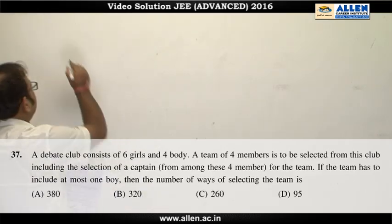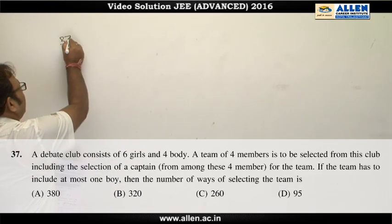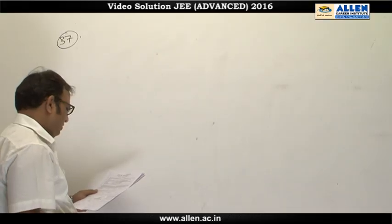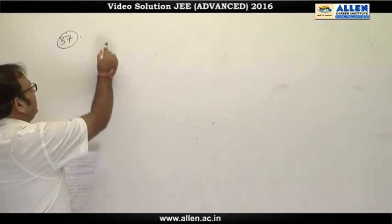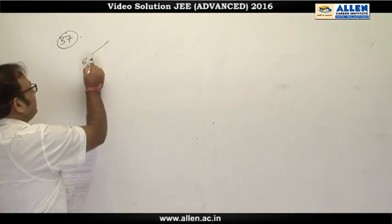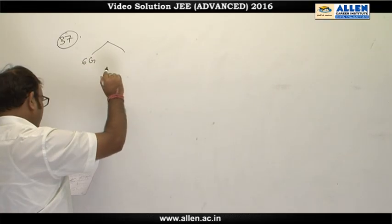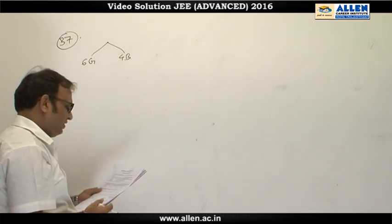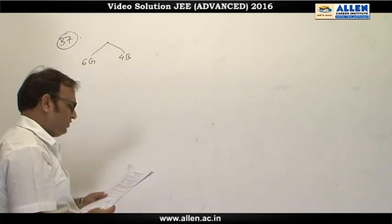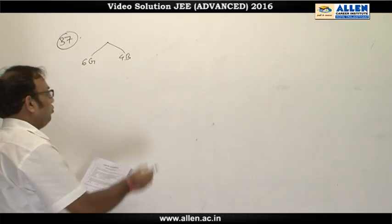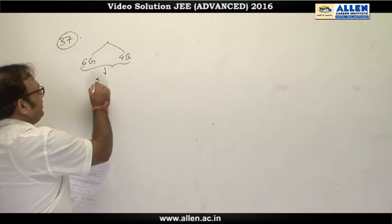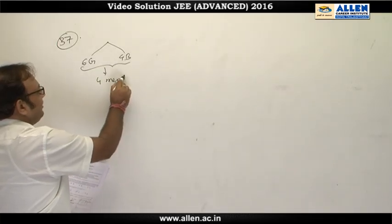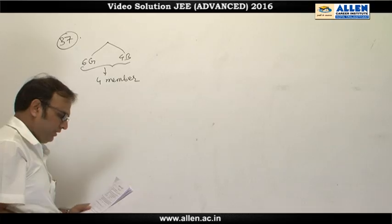Question number 37. In this question there are 6 girls and 4 boys, and out of these 6 girls and 4 boys a team of 4 members is to be selected having at most 1 boy.